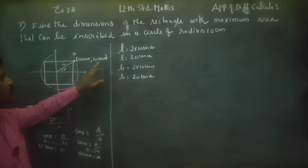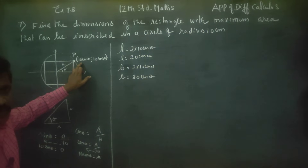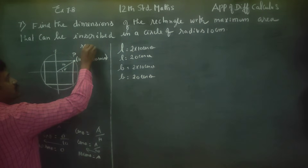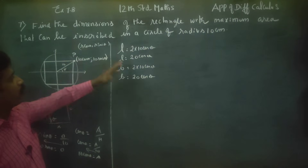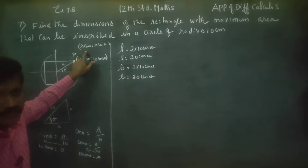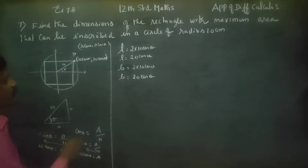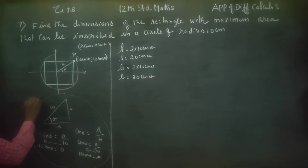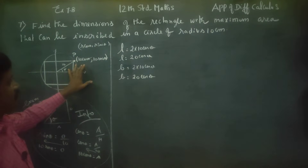From the parametric form, any point on the circle will be of the form (r cos theta, r sin theta). For our circle, that gives (10 cos theta, 10 sin theta). This is for your information. The diagram is set: 10 cos theta and 10 sin theta give us the length and we are focusing on maximum area.